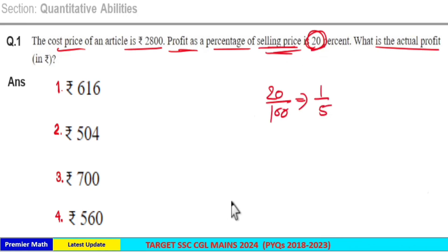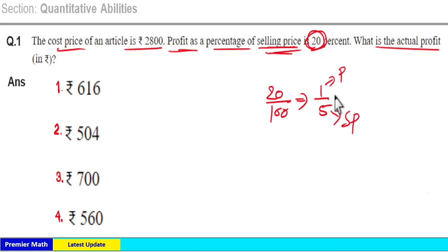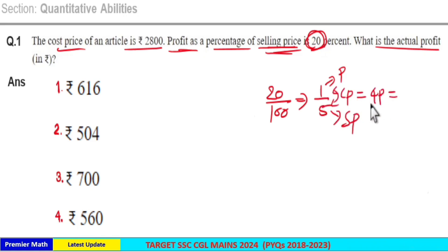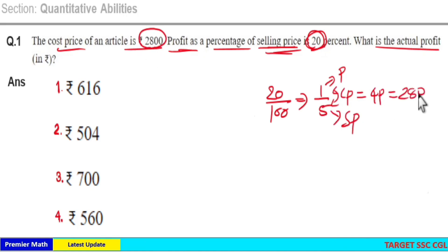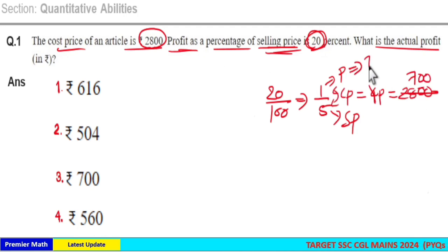1 by 5th of the selling price means if 1 part is profit then 5 parts is selling price. Selling price minus profit equals cost price, which is 5 minus 1 = 4 parts. Now 4 parts is given as 2800, which means 1 part is equal to 700. So profit, which is 1 part, is also 700 rupees.